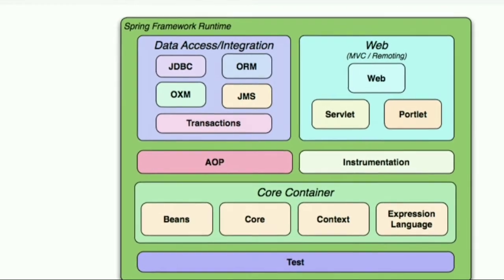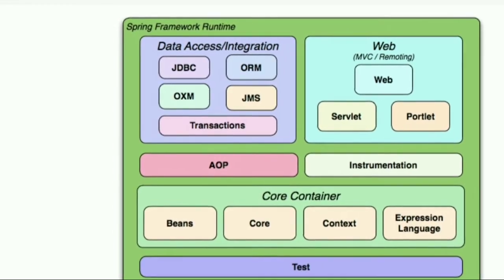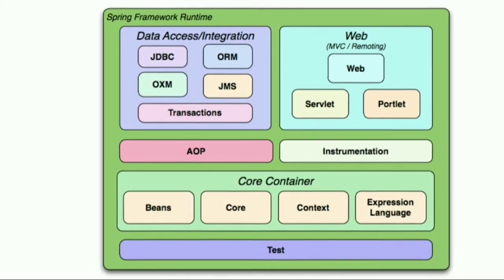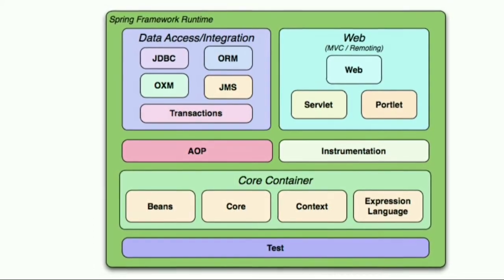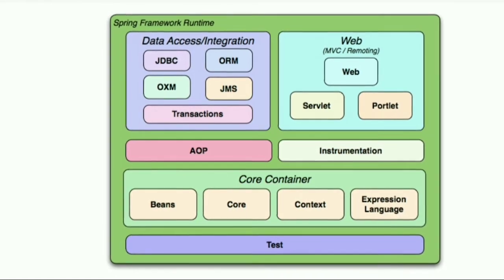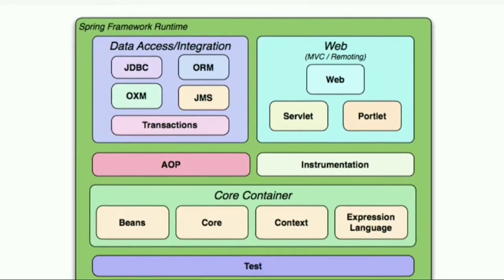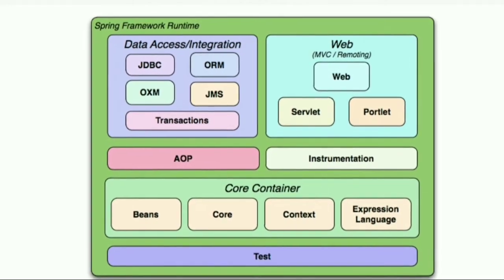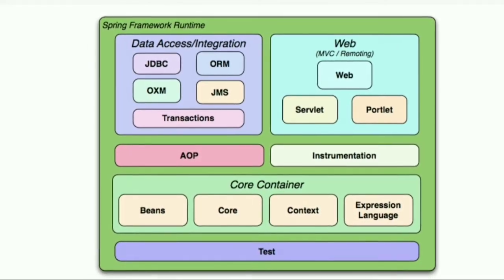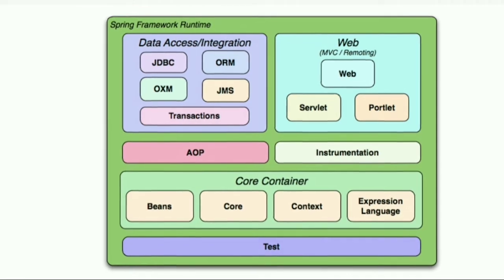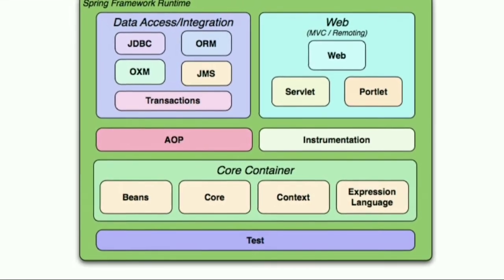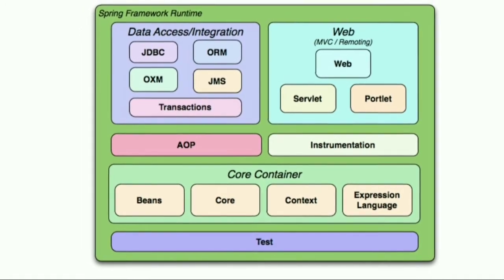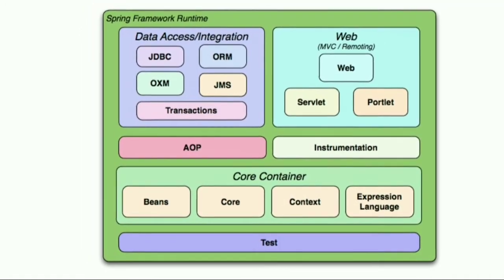We use the JDBC API in a very efficient way, reducing the amount of boilerplate code needed. The next module is Object Relational Mapping (ORM). This includes Java Persistence API, Hibernate, TopLink, and plain old Java objects — providing a way to map Java objects directly to our database.